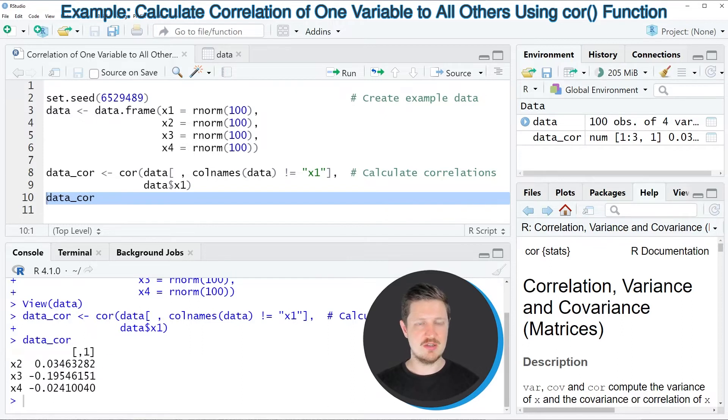Then you can see that we have created an output which contains only one column, and the row names of this matrix correspond to the other columns of our data frame: x2, x3, and x4. The values in this column correspond to the correlations of the column x1 to the other columns.